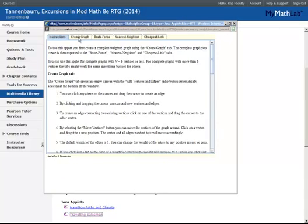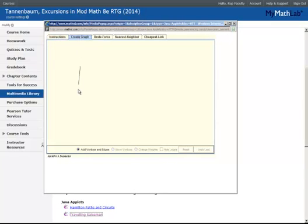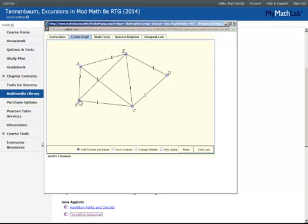Let's take a look at the traveling salesman. As you do this applet, you would begin by creating a graph. You can add as many vertices as you'd like, simply clicking the Add Vertices and Edges button at the bottom, and then clicking and dragging until you have your completed figure.